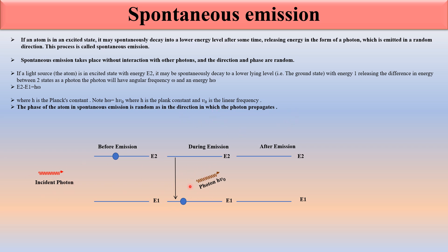This is not true for stimulated emission. When one electron automatically moves from E2 to E1 it generates one photon. Similarly, if there are many electrons moving automatically from E2 to E1, they generate a lot of photons which are all in random directions, random phases, and random energies.